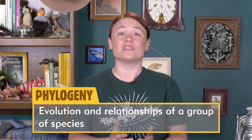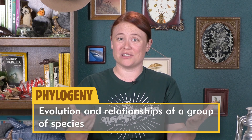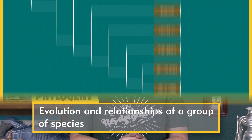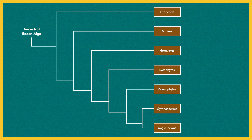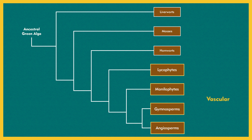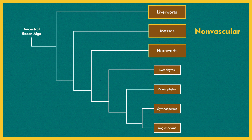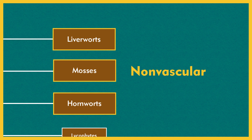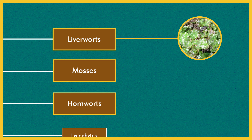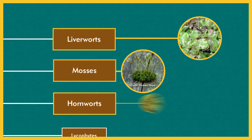Let's check out the diversity of plants by looking at one currently proposed phylogeny, or the evolution and relationships of a group of species. The first split on the plant phylogenetic tree is between vascular and nonvascular plants. Nonvascular plants lack extensive developed tissue systems that help move water and nutrients around the plants. These are commonly called bryophytes, or liverworts, mosses, and hornworts.